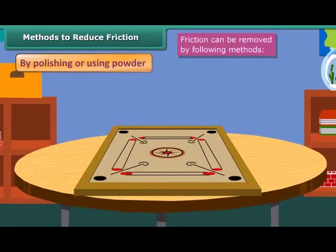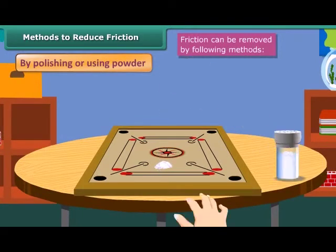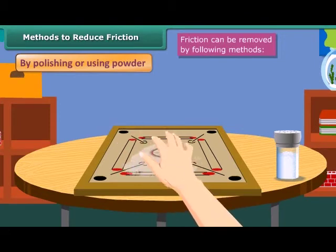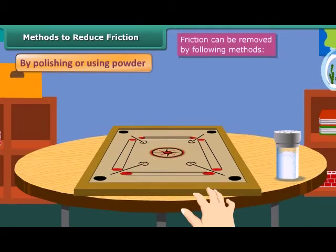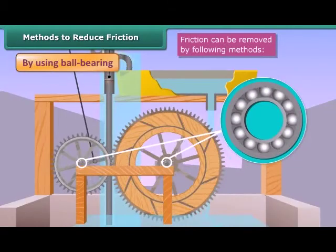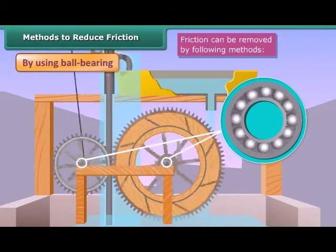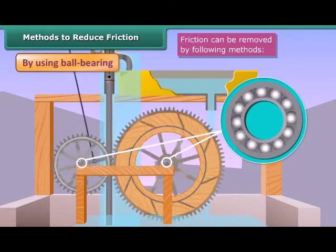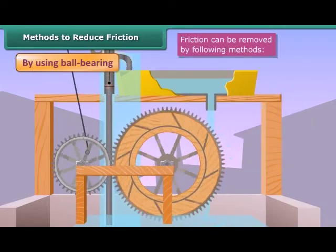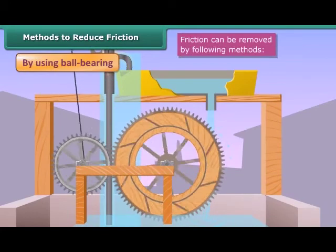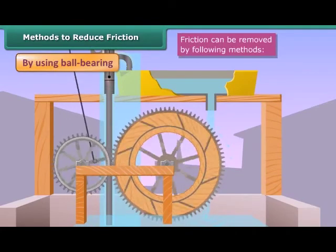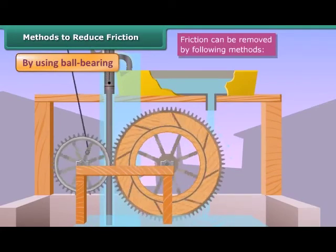Friction can be reduced by the following methods. By polishing or using powder: we can smooth rough surfaces by polishing or by using powder, and due to the smoothness, friction is reduced. By using ball bearings: ball bearings are hollow circular devices containing small metal balls, fitted around the moving part of a machine like an axle. Ball bearings reduce friction by converting sliding friction into rolling friction.